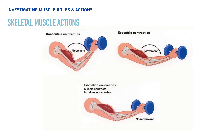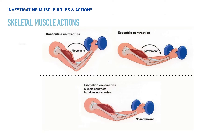Now that we have an understanding about muscle actions holistically, let's take a look at the two divisions in which all muscle contractions or actions can be placed. The first category is what we refer to as isotonic contractions, and the second is what we refer to as isometric contractions.